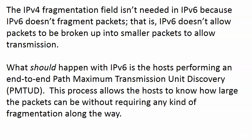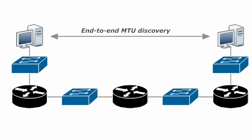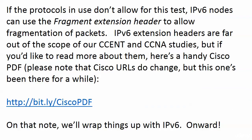Version 6 does not fragment packets. Fragmentation means packets broken into smaller packets for transmission, usually because a packet runs into an interface MTU (maximum transmission unit) smaller than the packet itself. With version 6, the host performs an end-to-end path MTU discovery (PMTUD), allowing the host to know the maximum packet size without requiring fragmentation along the way. The host discovers the MTUs end-to-end and simply doesn't send a packet larger than that.